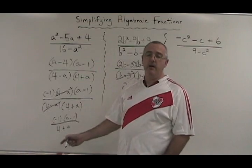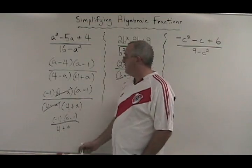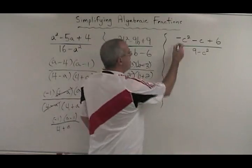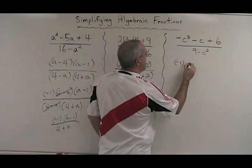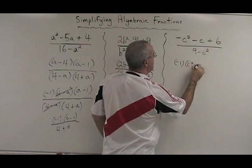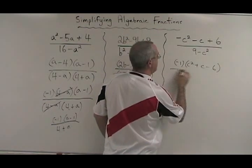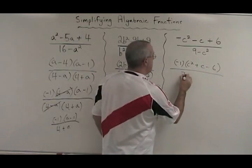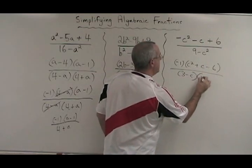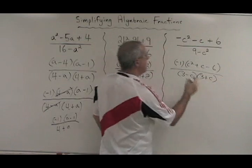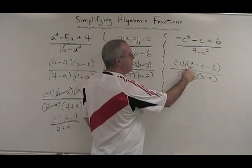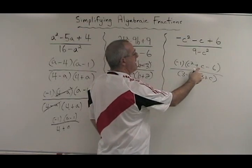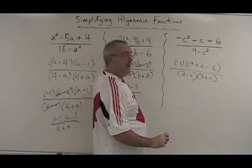The last example. In the numerator, I start by factoring out a negative 1, and I get C squared plus C minus 6. The denominator is the difference of squares. It factors to 3 minus C, 3 plus C. After taking out the negative 1, I apply the simple trinomial method, and I say which two numbers multiply to give negative 6 and add to give positive 1. That will be 3 and negative 2.